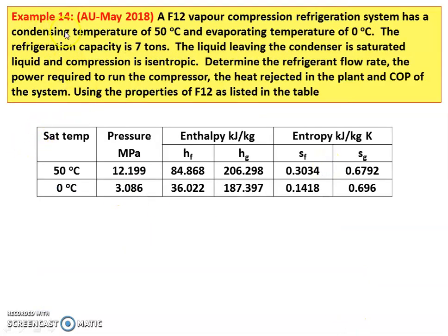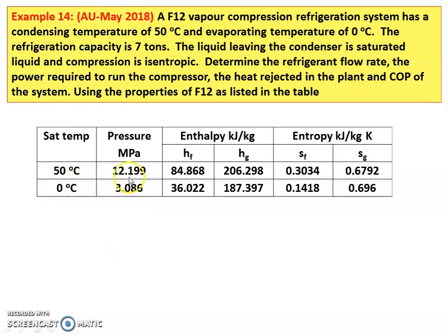The next question is from the May 2018 question paper, Example number 14. A Freon 12 vapor compression refrigerant system has a condensing temperature of 50 degree Celsius and evaporating temperature of 0 degree Celsius. The refrigeration capacity is 7 tons. The liquid leaving the condenser is saturated liquid and the compression is isentropic. Determine the refrigerant flow rate, power required to run the compressor, heat rejected in the plant, and the COP. The properties of Freon 12 are listed in the table.